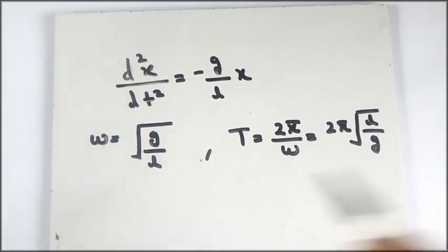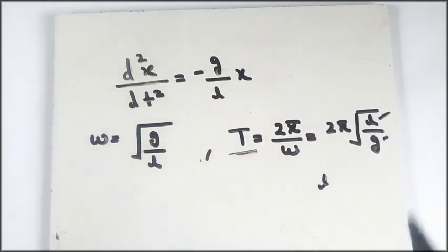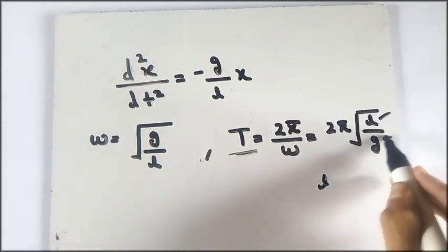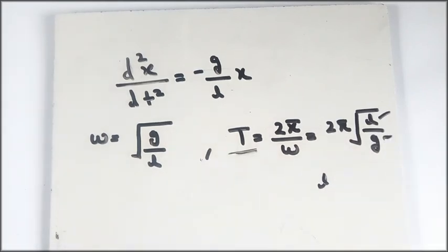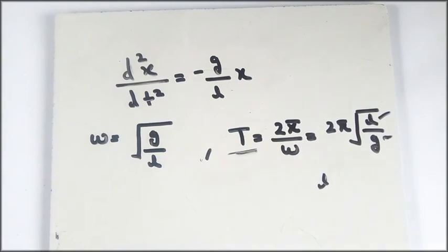From this equation we can see that the time period of a simple pendulum does not depend on mass — it depends on the length of the string l and the acceleration due to gravity g. If g increases, the time period decreases; if the length increases, the time period also increases.